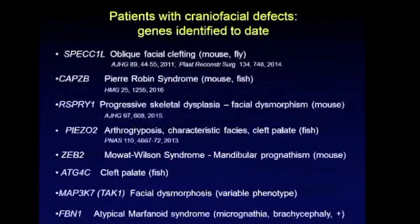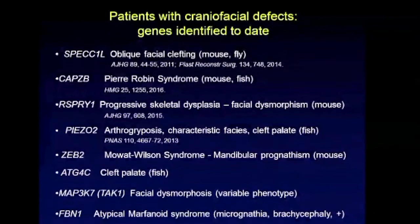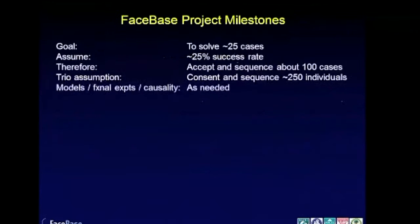Some genes we got a head start on — some cases were started before we began phase two, some were published earlier — but we've had successes. One is the CAPZB gene involved in craniofacial development and clefting, and then RSPRY1. We've had a big assist from our collaborators, but before discussing that I want to go over the milestone projections and show where we are.